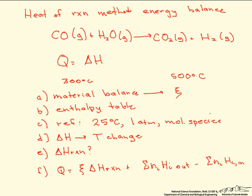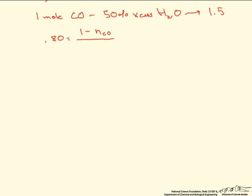So let's start with doing our material balances. Let's say that we are given 1 mole of CO, 50% excess of H2O, which means we have 1.5 moles of H2O. Our conversion is 80%, so 0.8 equals moles of CO in minus moles of CO out, divided by the moles in.